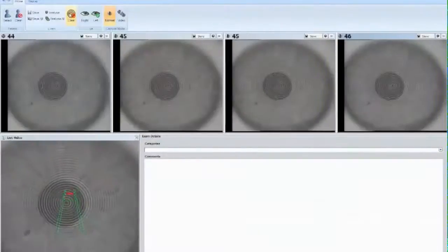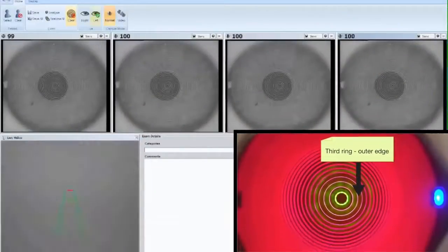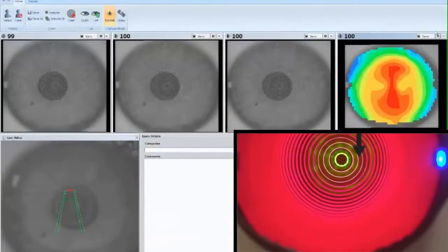Finally, we ask the patient to look horizontally at the outer edge of the third ring toward the nose to achieve a centralized topography.